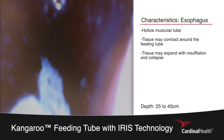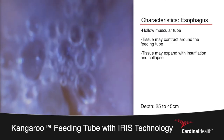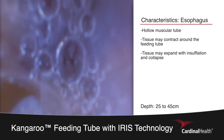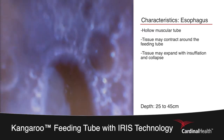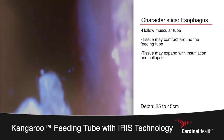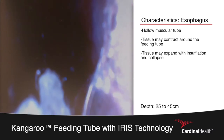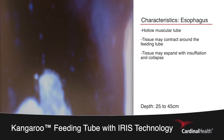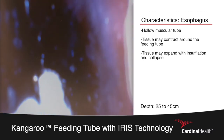The esophagus is a long hollow muscular organ that collapses on itself. This is of course opposed to the long rigid open structure of the trachea.